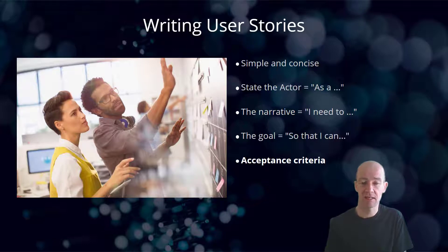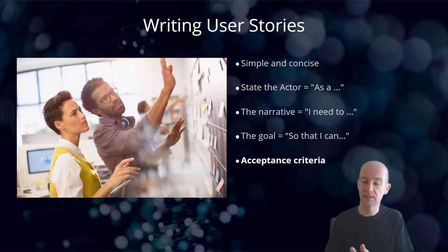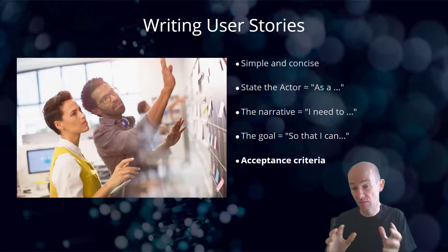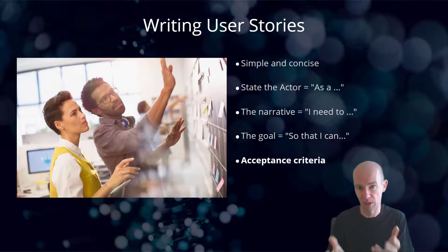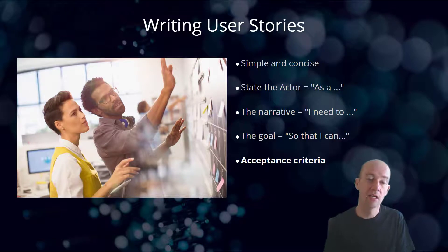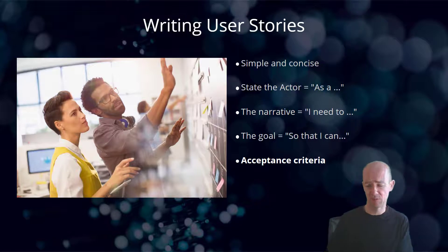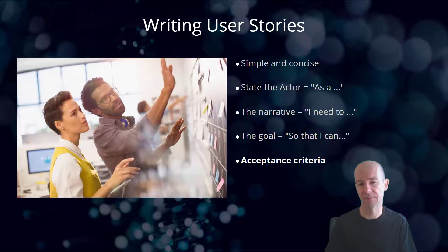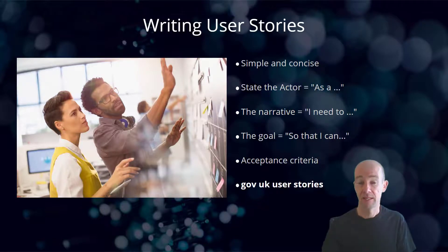You then go on to say what the acceptance criteria is for that user story. To my mind, the user story itself is really, really important, and the acceptance criteria is in some ways a derivative of that user story. But it is important — it means that people can then go back and check whether they've actually ticked it off, so it's a bit more technical.